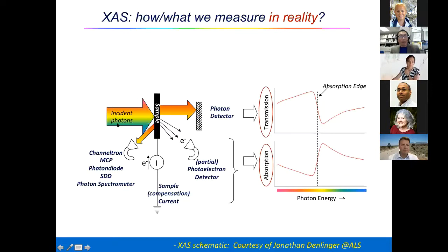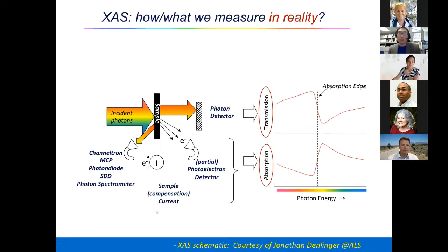That gives you the so-called absorption coefficient, which is your signal to detect. The most straightforward way is: if you have 100 photons coming in, and then you have 50 left picked up by your detector after penetrating through your sample, your absorption rate is 50%. So you put a detector here, you'll have roughly 100 photons, and then going through the sample, if the photon starts to be absorbed at the absorption edge, you will see a drop in the number of photons picked up.